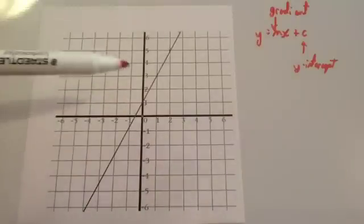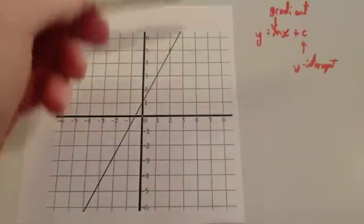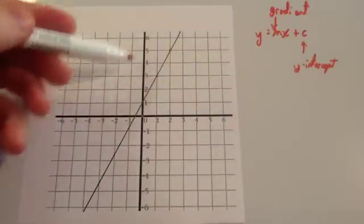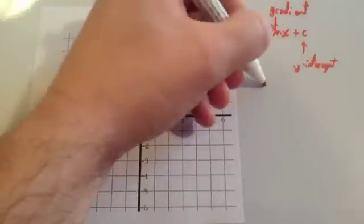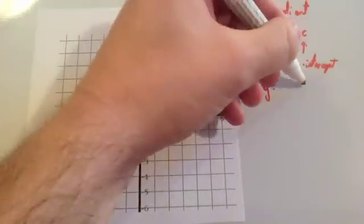So, if I had this line here and I wanted to find this equation, the first thing I'd actually personally do is find out the y-intercept. The y-intercept is where it crosses the y-axis, so it crosses the y-axis at 1. So, it's going to be y equals something x plus 1.